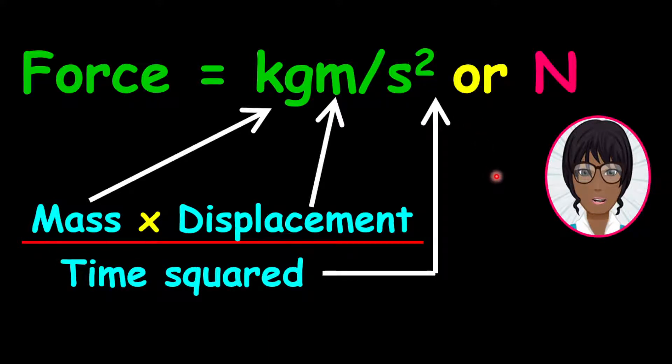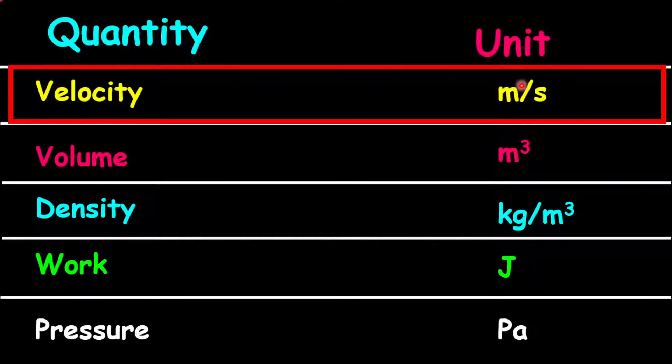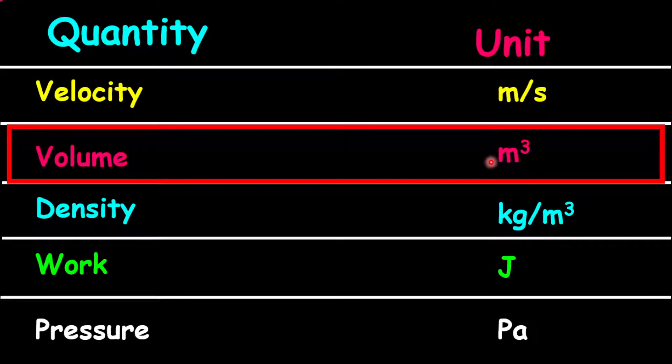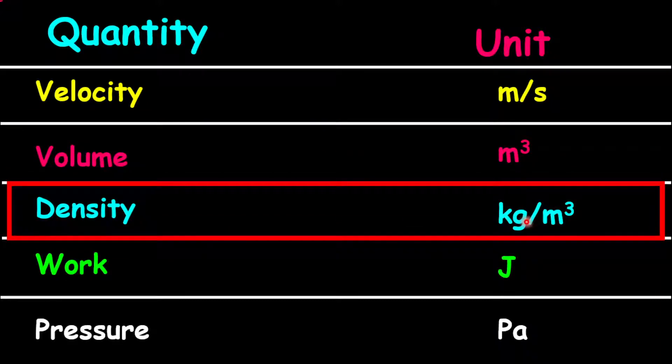Let us look at some other derived quantities. The first one that we are looking at is velocity. Velocity is measured in meters per second. This is a division combination of length and time. The other derived quantity is volume. This is a multiplication combination of length. Density is another quantity; it is a division combination of mass and length.